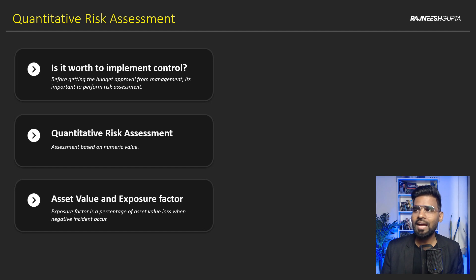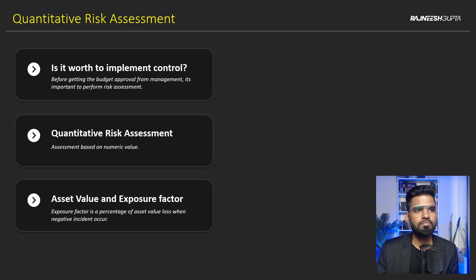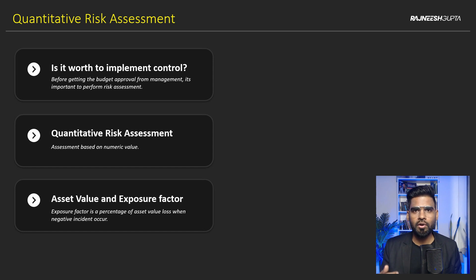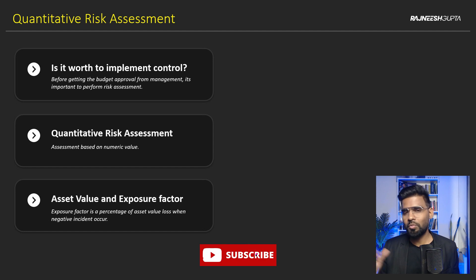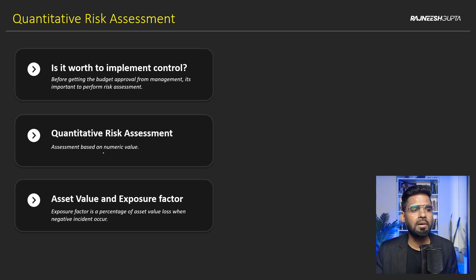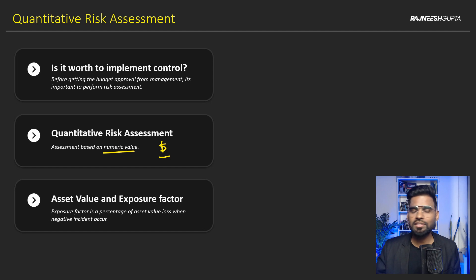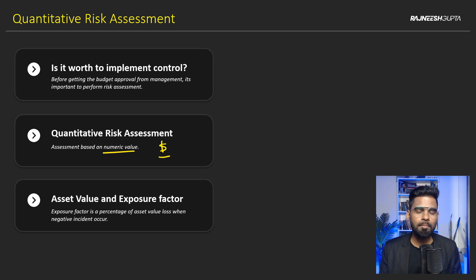The first thing we need to learn about is what exactly is quantitative risk assessment. We have already learned about risk assessment, but when we talk about quantitative risk, it's all about how you convince the manager or get senior management to approve applying controls. The way to do that is through numbers — specifically dollars. Quantitative risk analysis is all about presenting risk in dollar terms so it's easier for senior management to make the right decision.